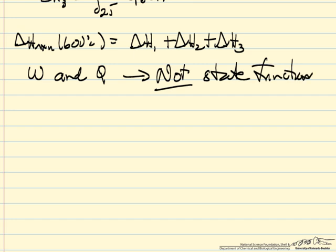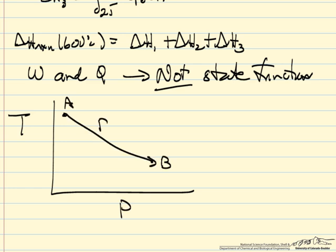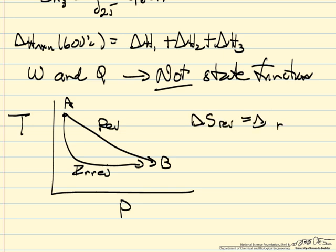Remember, state function means if I go, let's say a T-P diagram, if I go from A to B by a reversible pathway, and I go from A to B by an irreversible pathway for some gas, then delta S for the reversible pathway is the same as delta S for the irreversible pathway.